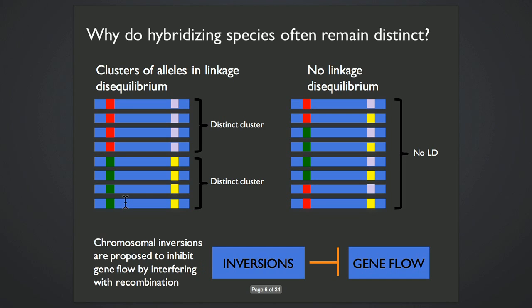One well-known factor is chromosomal arrangement. Chromosomal inversions inhibit gene flow by interfering with meiotic recombination.